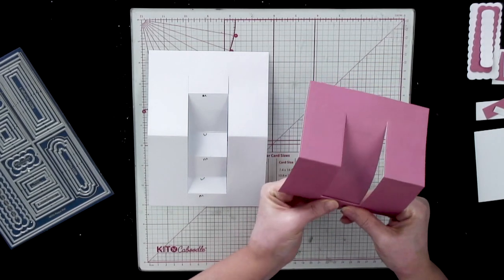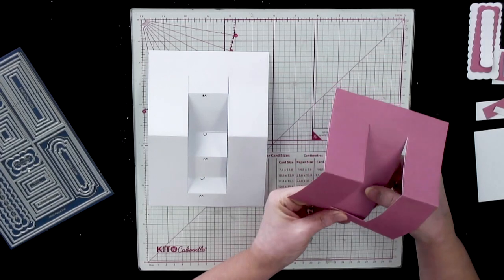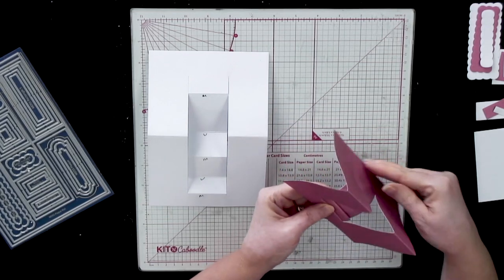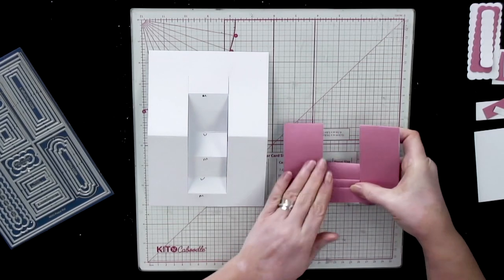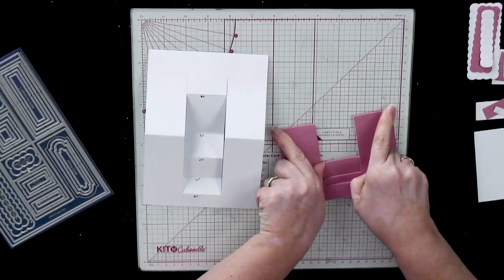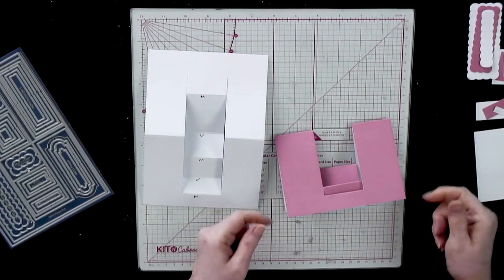The next one is a valley, the next one is a mountain, the next one is a valley, the next one is a mountain. And then you would have a scoring tool and you would score all of those down.